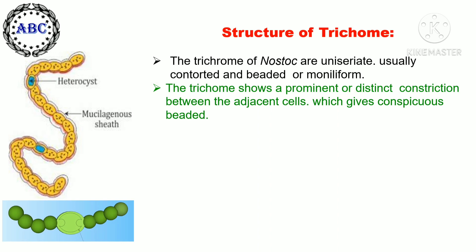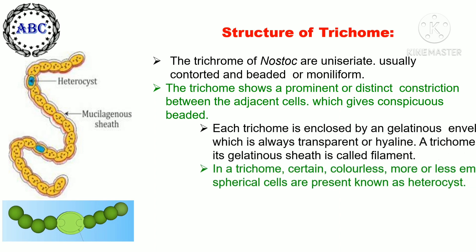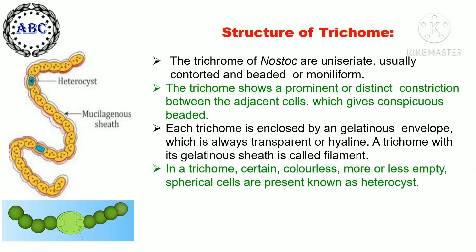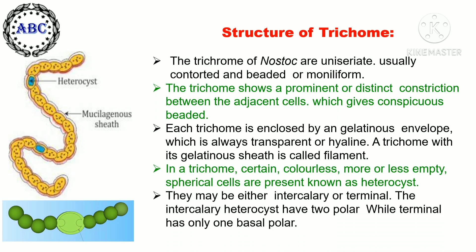The trichome of Nostoc is uniseriate, usually contorted, and moniliform (beaded). The trichome shows a prominent constriction between adjacent cells, giving a conspicuous beaded appearance. Each trichome is enclosed by a gelatinous envelope which is always transparent or hyaline. The trichome with its gelatinous sheath is called a filament. In a trichome, certain colorless, more or less empty spherical cells are present, known as heterocysts. They may be intercalary or terminal; intercalary heterocysts have two polar nodules while terminal ones have only one basal polar nodule.